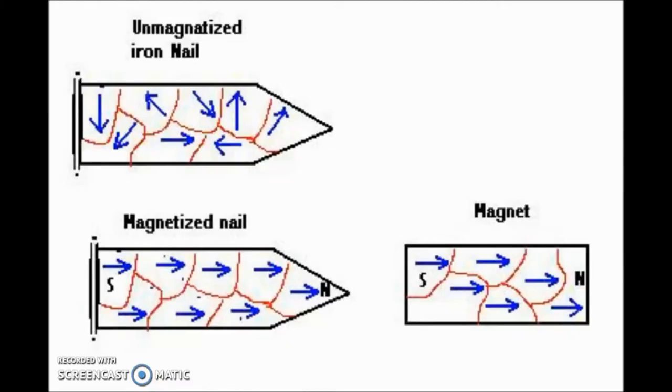The reason a compass works is because, just like a permanent magnet, all of the electrical charges in the needle line up in the same way, which increases the force of magnetism on the needle.